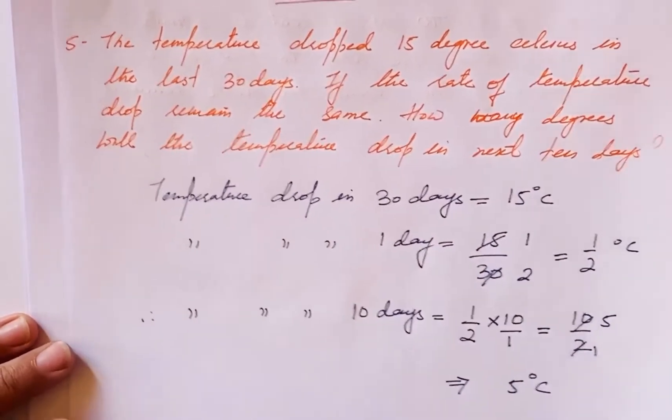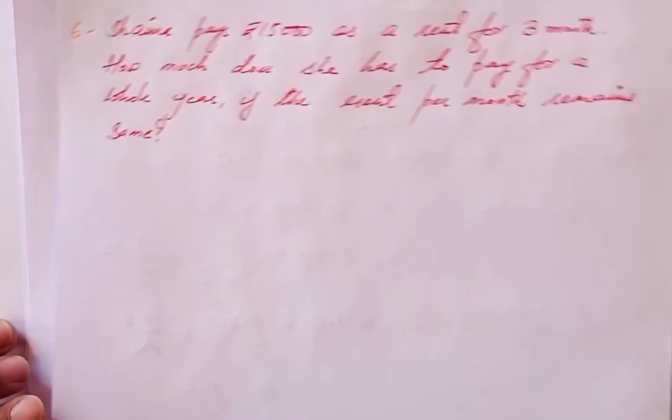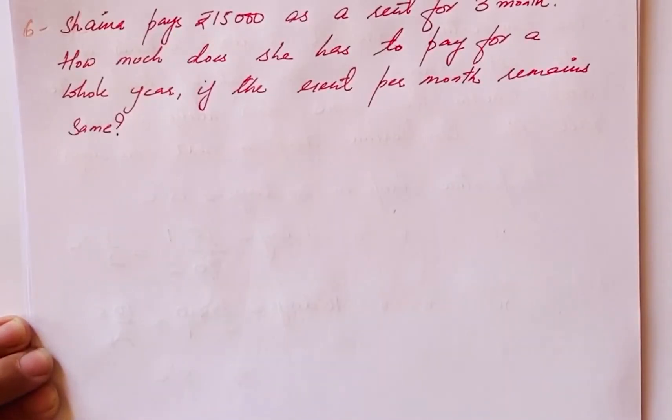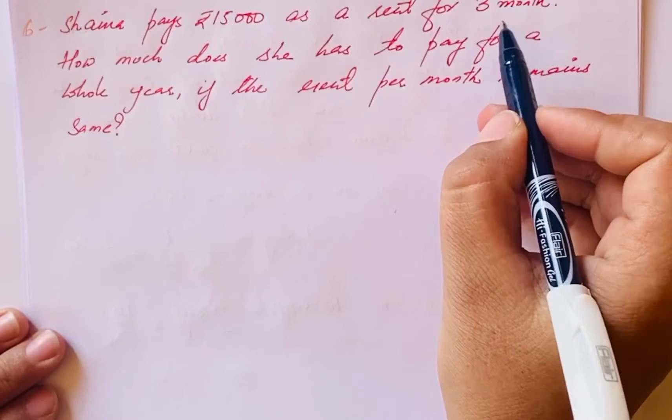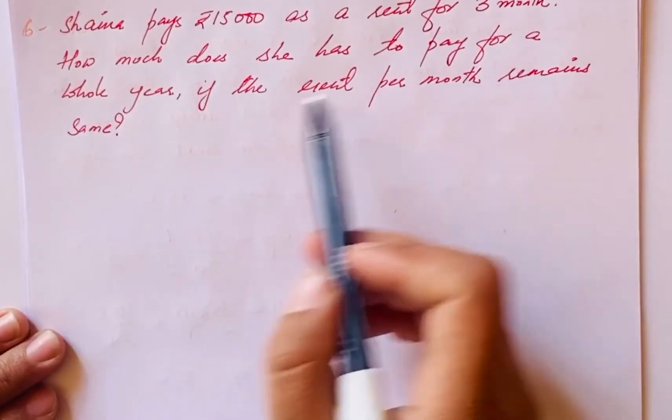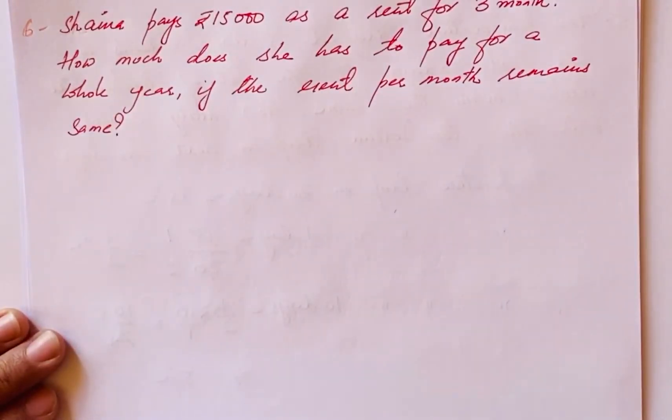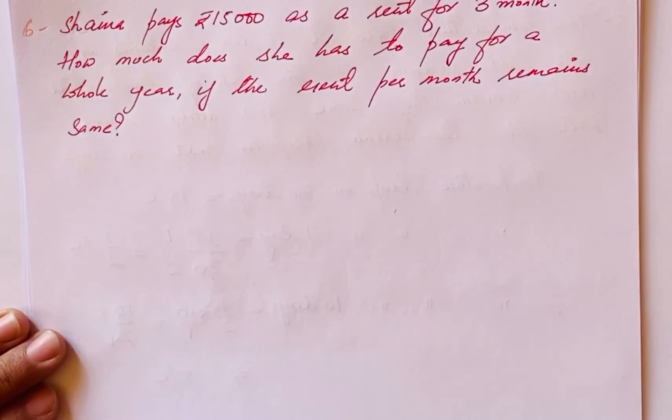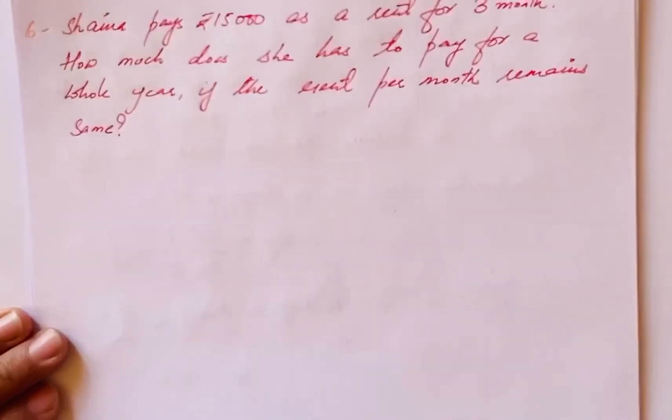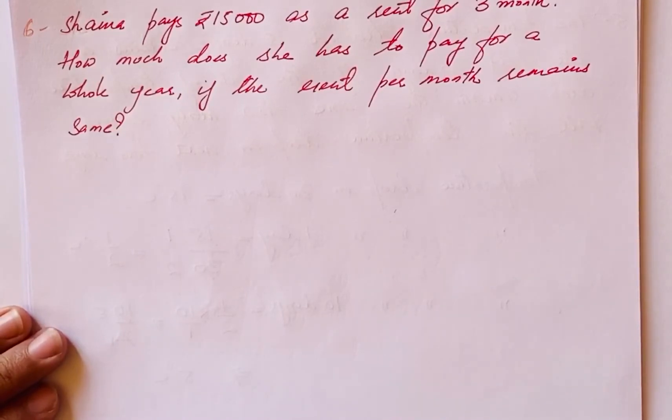This was your fifth question. Let's move on to question number six. Shaina pays 15,000 rupees as rent for three months. How much does she have to pay for the whole year if the rent per month remains the same? Each month she has to pay the same amount of rent.